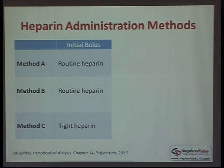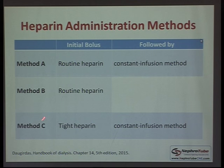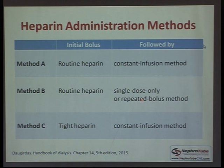There are three heparin administration methods, all using an initial bolus. Routine heparin uses a high initial bolus, and method C uses a low-dose bolus. Both method A and method B use heparin as a constant infusion after the bolus, at different doses. Method B starts with an initial bolus followed by repeated bolus doses rather than infusion, while another approach uses only the first initial bolus with no repeated doses.